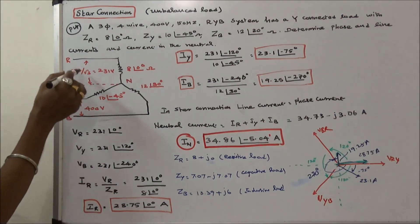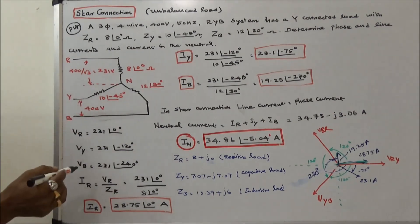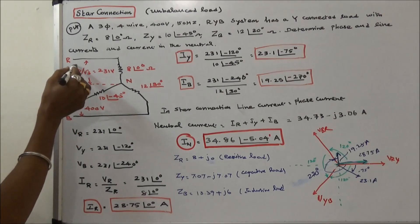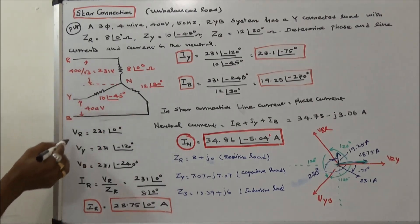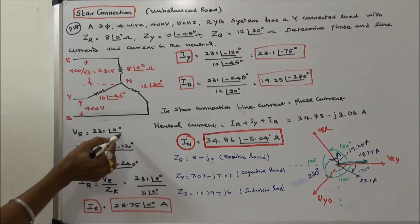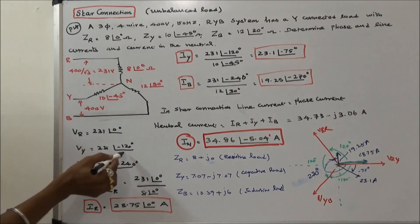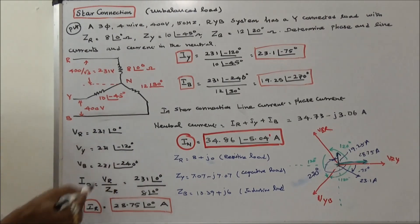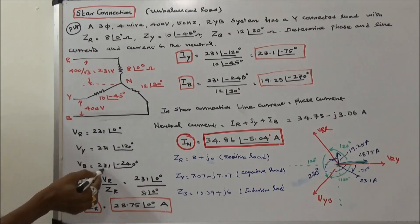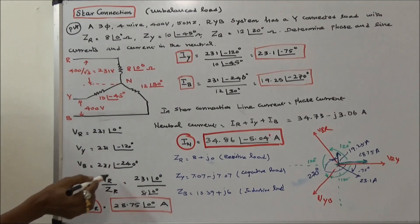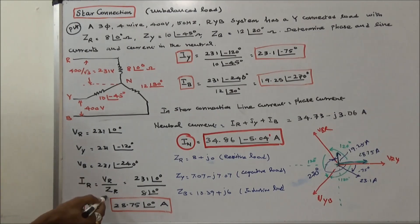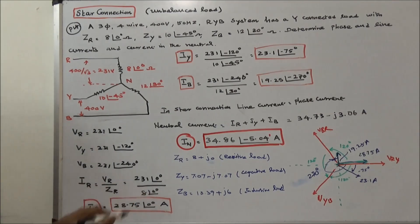The line voltage is given as 400V, so the phase voltage is 400 divided by root 3, equal to 231V. VR is equal to 231 angle 0 degrees, VY is equal to 231 angle minus 120 degrees, VB is equal to 231 angle minus 240 degrees. First we calculate IR: IR equals VR divided by ZR, which gives IR equal to 28.75 angle 0 degrees amps.